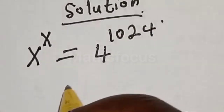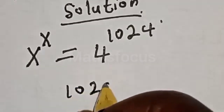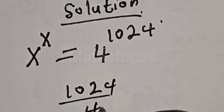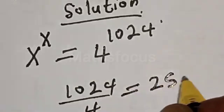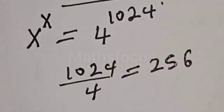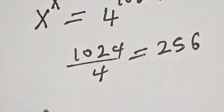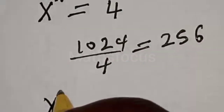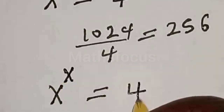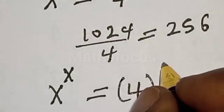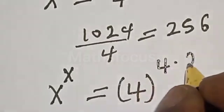Now, let's see what will happen. 1024 divided by 4 is equal to 256. Therefore, S raised to power S will be equal to 4 raised to power 4 multiplied by 256.